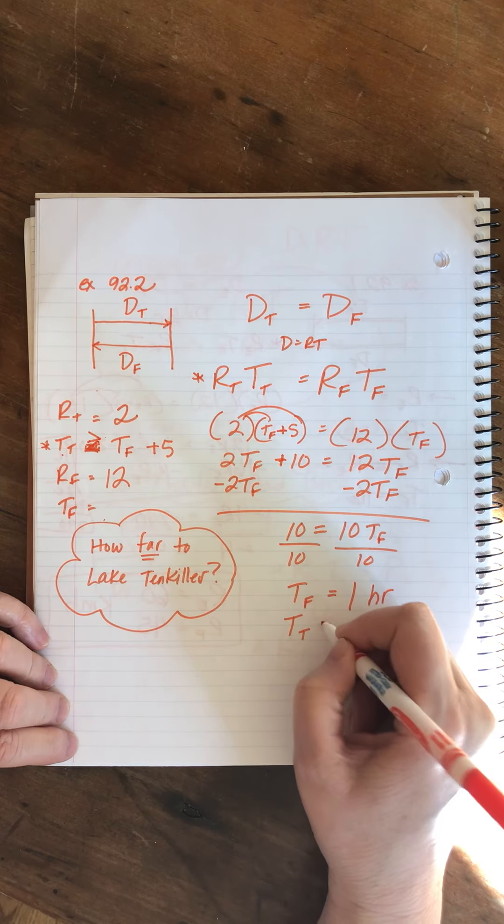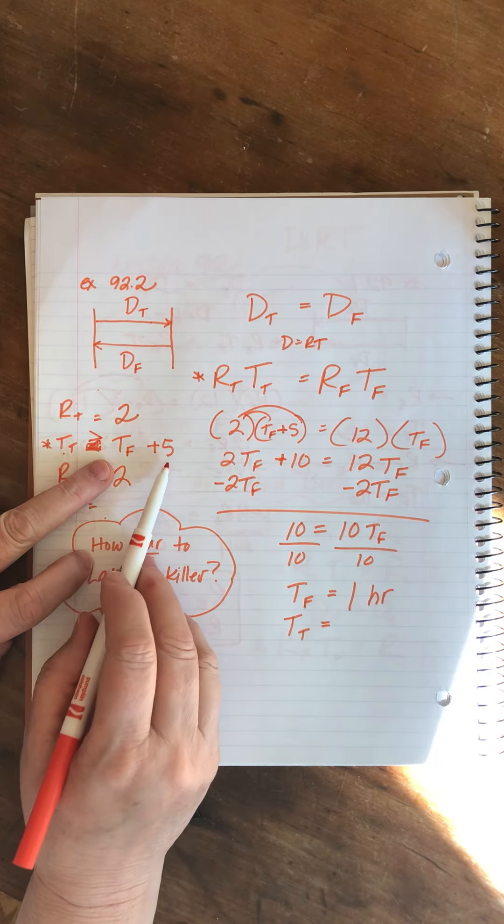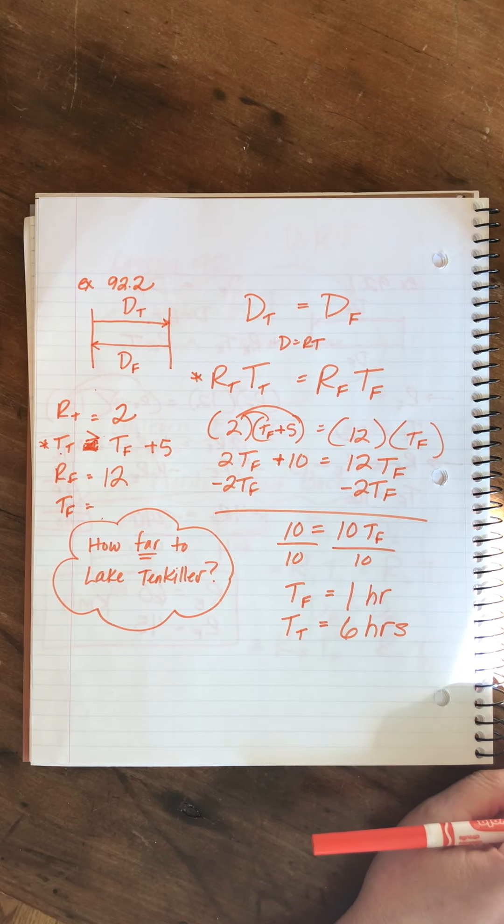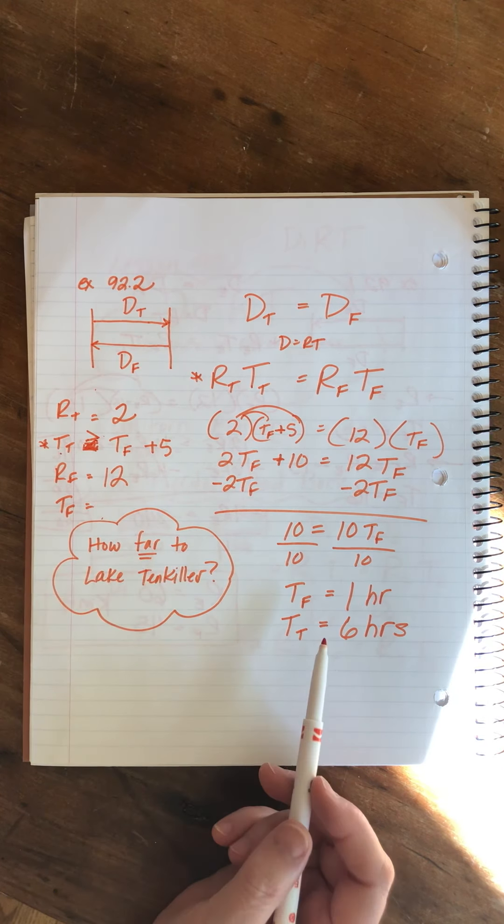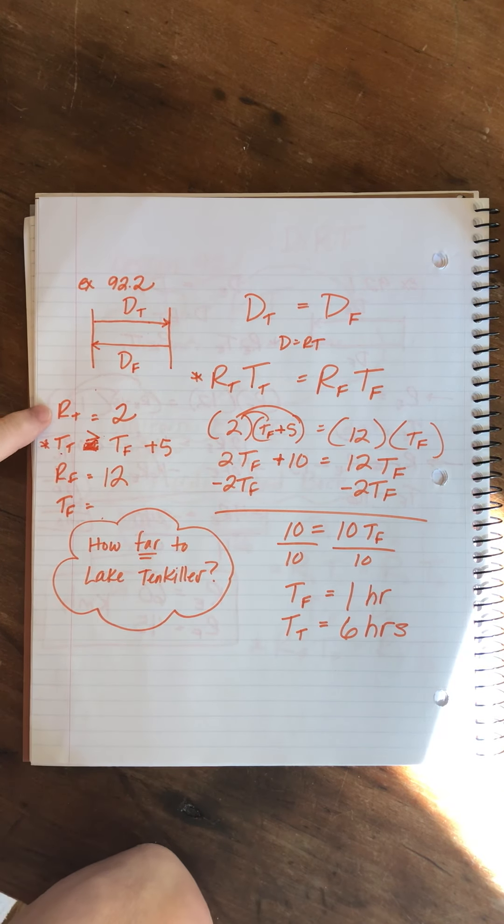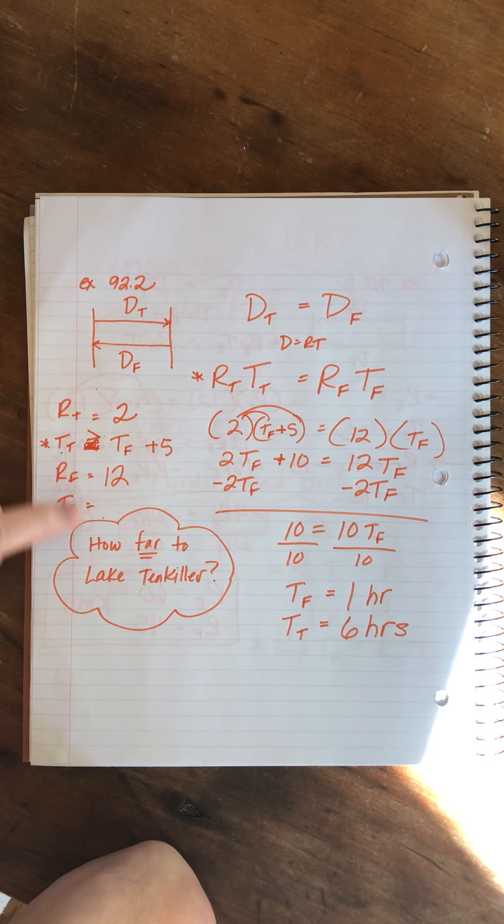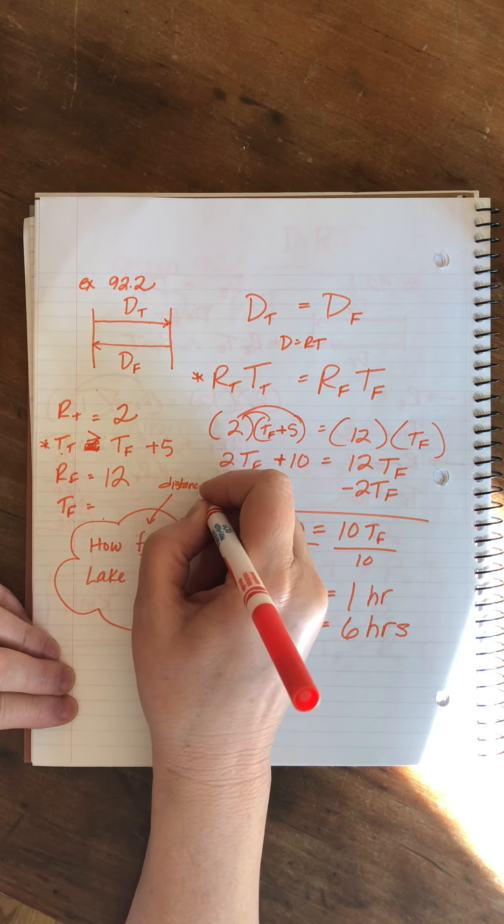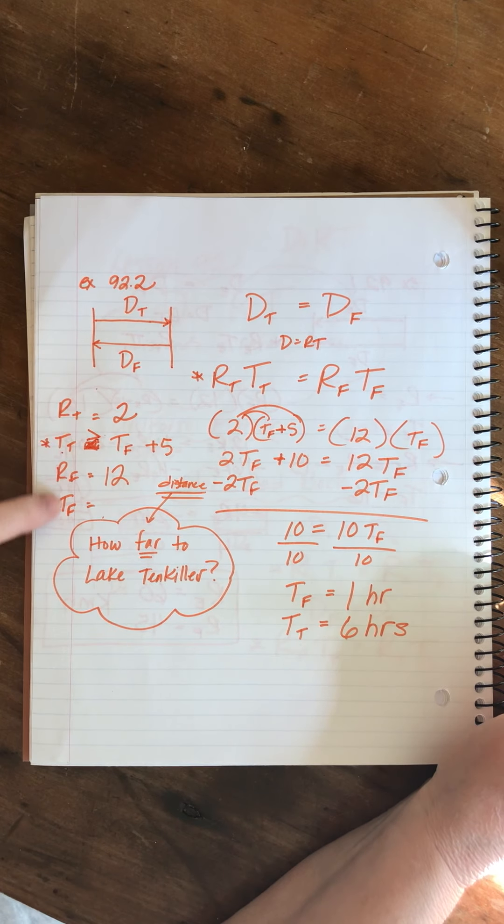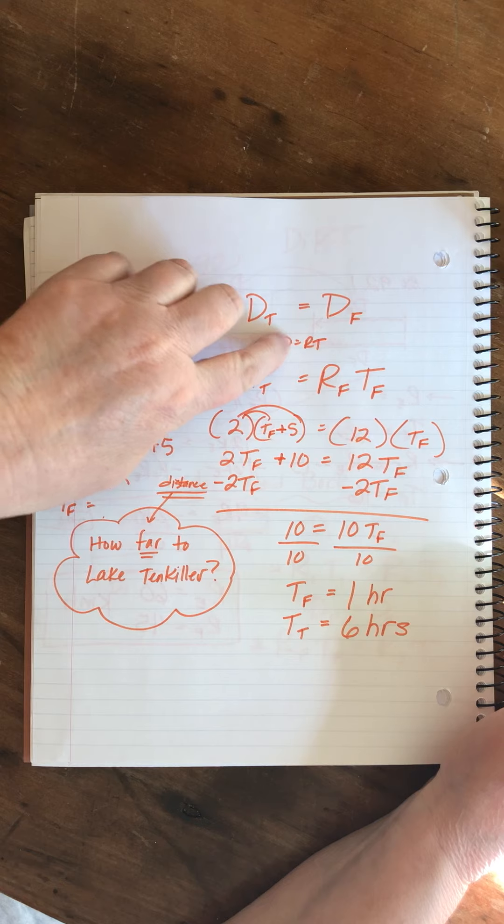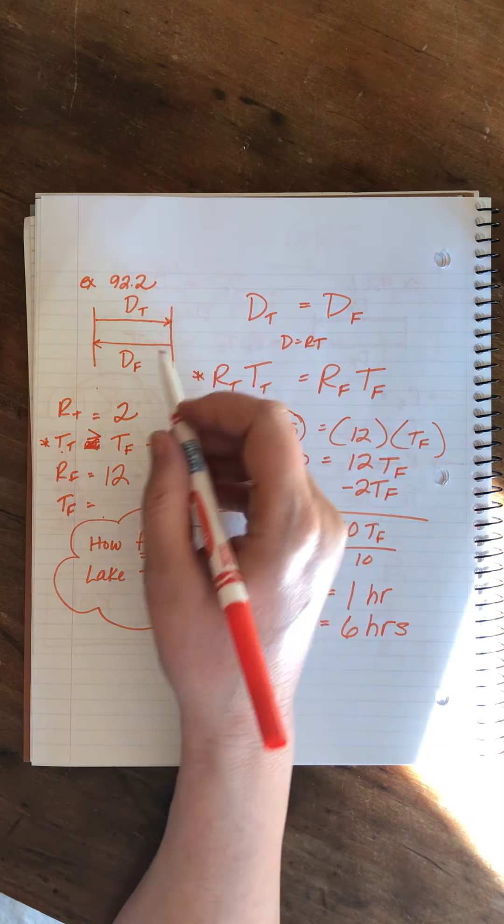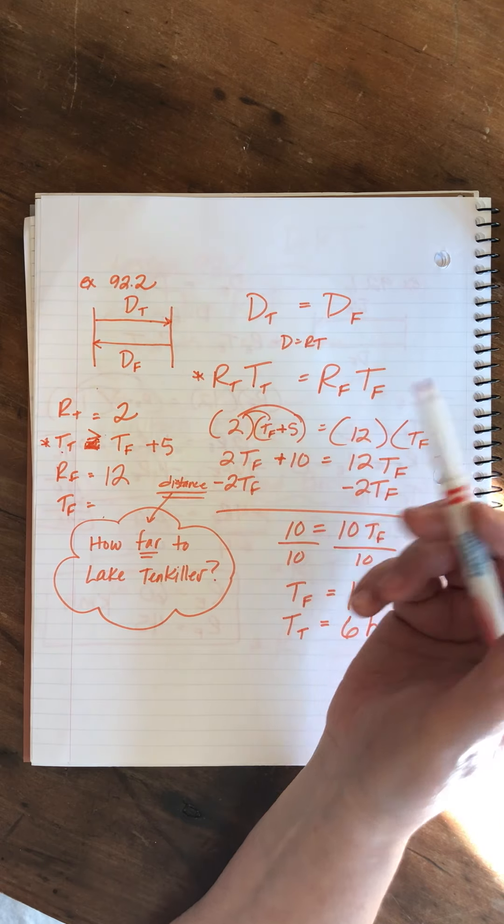The time that it took them to go to Lake 10 killer would then be six, right? We add five. Now. Did we answer the original question though? How far is it to Lake 10 killer? Well, I look at my variables and I go far. That's not a rate. That's not how fast. It's not a time. How long. How far. We don't usually get asked the distance as part of our answer. We usually get asked the rate or the time, but the distance to go all the way back here is the rate times the time. Hmm. Well, do they mean the rate times the time to the lake or the rate times the time coming back from the lake? Guess what? It doesn't make any difference. You can do it either way.